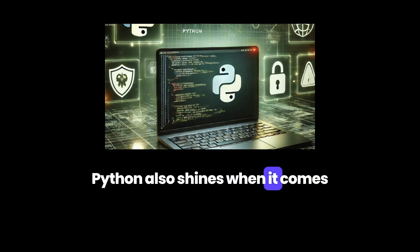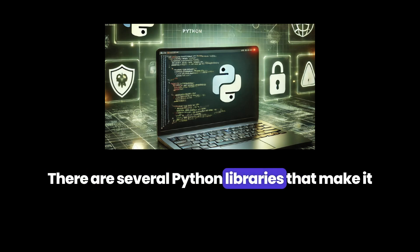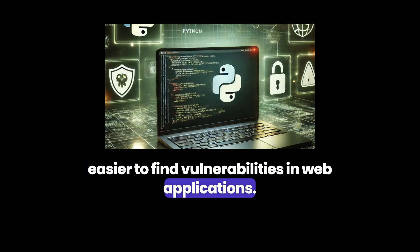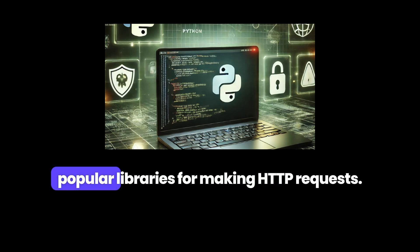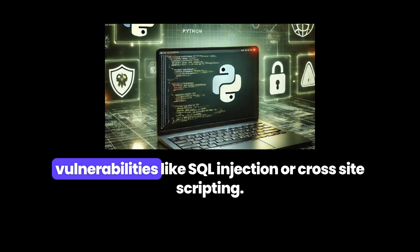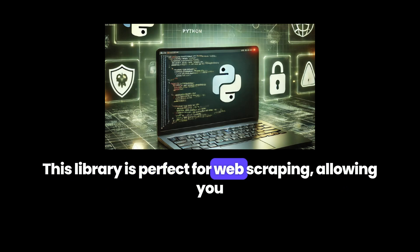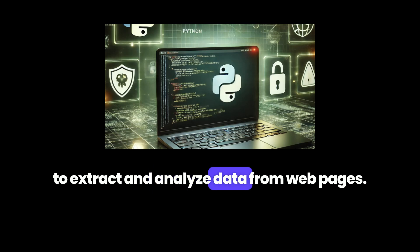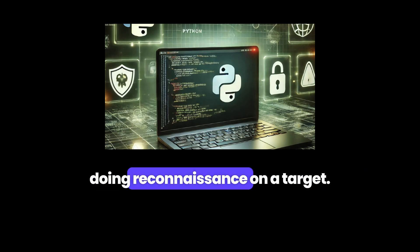Python also shines when it comes to web app penetration testing. There are several Python libraries that make it easier to find vulnerabilities in web applications. One is Requests — one of the most popular libraries for making HTTP requests. You can use it to check for common vulnerabilities like SQL injection or cross-site scripting (XSS). Another library is Beautiful Soup, which is perfect for web scraping, allowing you to extract and analyze data from web pages. This can be useful when you're doing reconnaissance on a target.